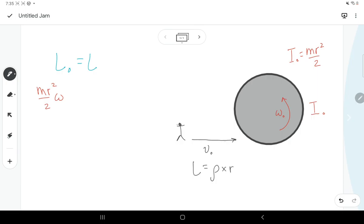And since they're running here, but we only care about that instant right when they're about to jump on. And so their r is going to be the radius of the circle. So we can say the mass of the person times velocity initial times r is equal to their initial angular momentum.